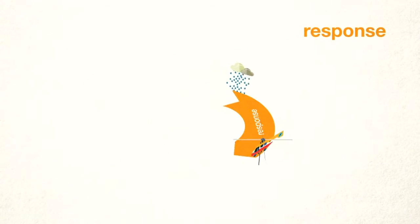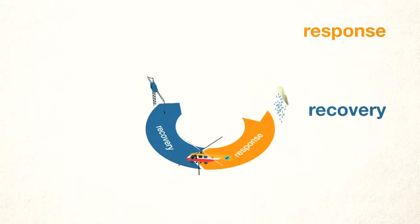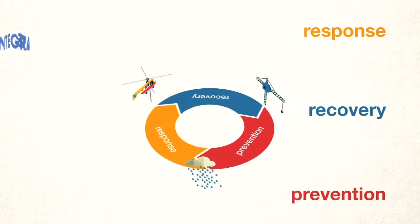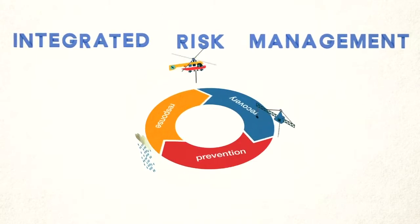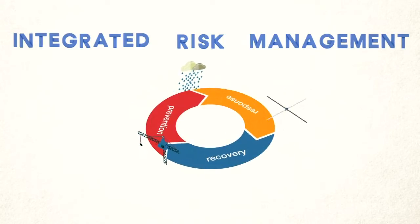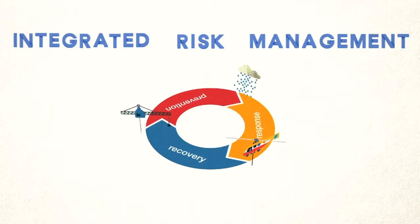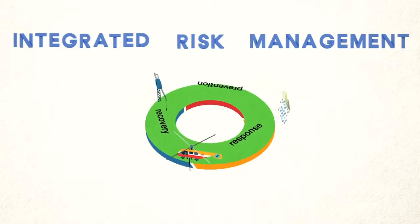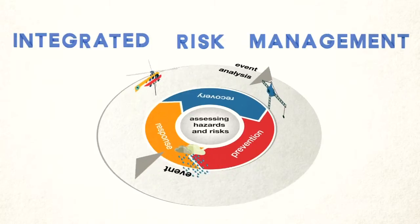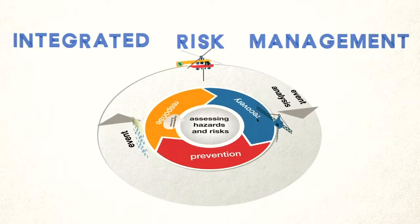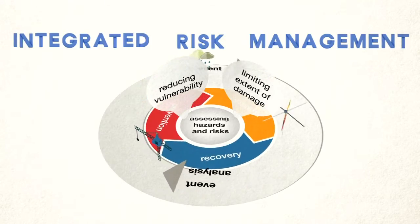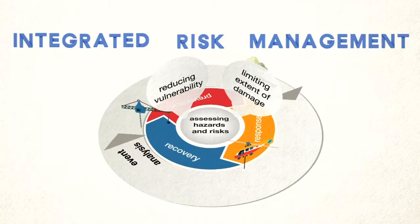Disaster response and recovery are absolutely necessary. But disaster management could be even more effective through adopting an integrated risk management approach. Instead of dealing with each stage of the disaster cycle independently, preventing disasters can be a part of all stages of disaster management. This is possible when we have in-depth information of all hazards and vulnerabilities. Once we know what could happen and we compare that with what is allowed to happen, we can derive the necessary measures to minimize the impacts before a disaster occurs.